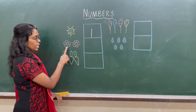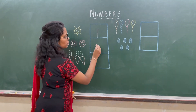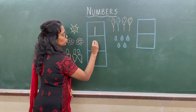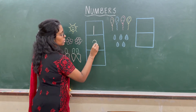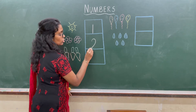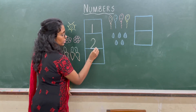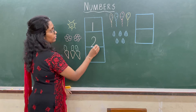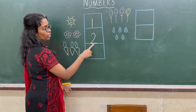Now how many flowers are there? 1, 2 — so we have to write the number 2 here. Now try the number 2: curve, slanting line, touch the line down, and a horizontal line. Keep in mind that whenever you write numbers, you have to touch these lines down.